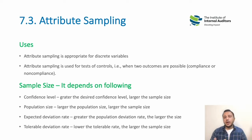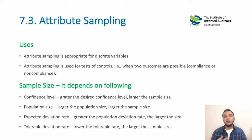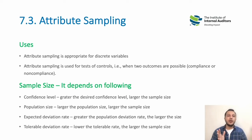Attribute sampling is mainly used when we are applying the test of controls. However, it doesn't mean it cannot be applied to substantive testing. To a greater extent, we distinguish between attribute and variable sampling by focusing on the attribute of a control when we apply attribute sampling.